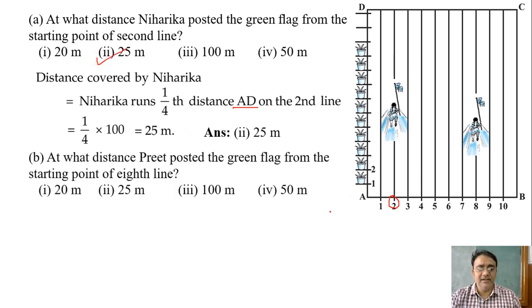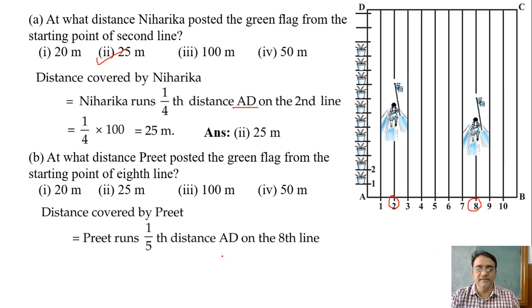Now the next question: At what distance Preeth posted the green flag from the starting point of eighth line? And she posted at a distance of one fifth of AD. One fifth of 100, so what is the distance? 20 meters. One fifth of AD that is 100 is equals to 20 meters. So which option is the correct one? Option 1.